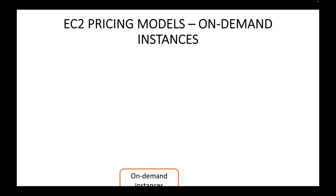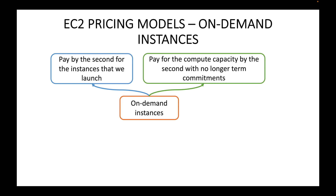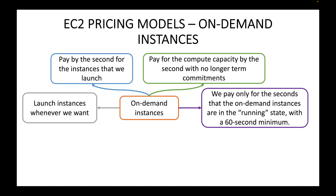First, let's look at on-demand instances. With on-demand instances we can launch instances whenever we want — as the name suggests, it's on demand. We will be paying by the second for the instances that we launch. If you run an instance for 30 seconds, you only pay for those 30 seconds. You pay for compute capacity by the second with no long-term commitment.